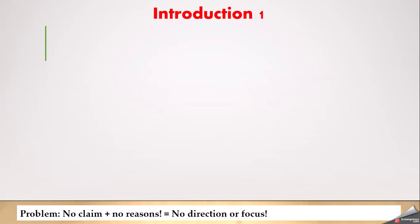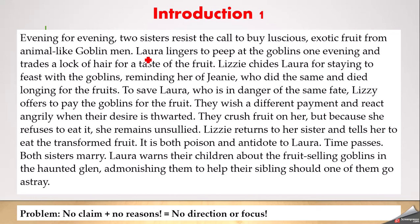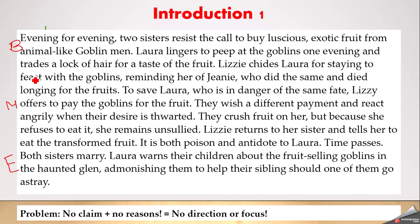Here is our first problem introduction — it doesn't have a claim and it doesn't have reasons, so there's no direction or focus. The student wrote: 'Every evening, the sisters resist the call to buy luscious fruit from the goblin men. Laura lingers. Lizzie chides her to save Laura, who is in danger. Lizzie offers the goblins payment for fruit. They crush fruit on her because she refuses to eat it. She remains unsullied. It's both a poison and an antidote. Later, both sisters marry and warn their children.' You can see this is the beginning, middle, and end of the poem — it's a summary.